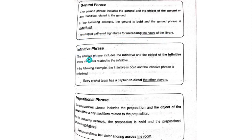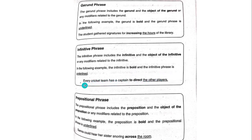Infinitive phrase. The infinitive phrase includes the infinitive and the object of the infinitive or any modifiers related to the infinitive. In the following example, the infinitive is bold and the infinitive phrase is underlined. Example: 'Every cricket team has a captain to direct the other players.'